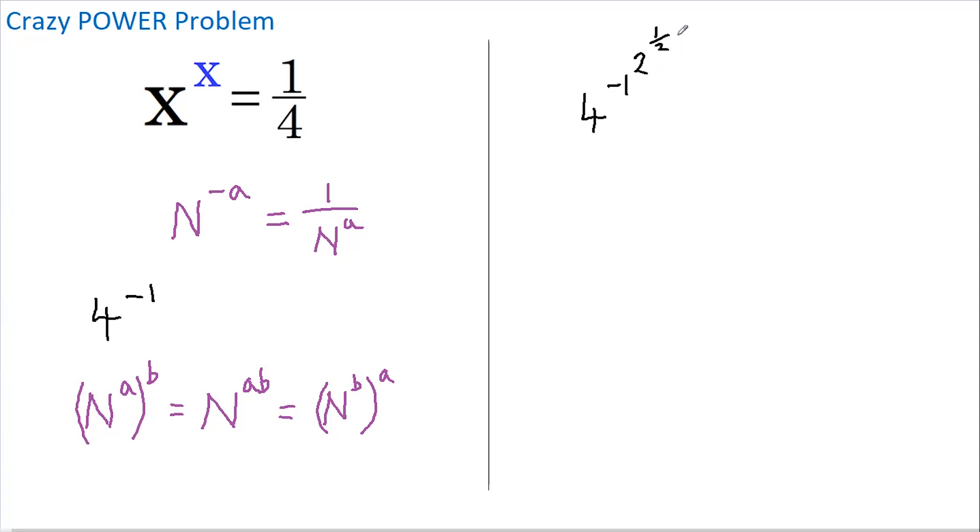Now you should see that that has no overall effect. If I square a number then take the square root, we're back to where we started. Also, look what would happen if I brought that half down and multiplied it by the 2, as this rule here allows us to do. We would then have 2 times a half, which is 1, so we'd be raising everything to the power of 1, which again has no overall effect.